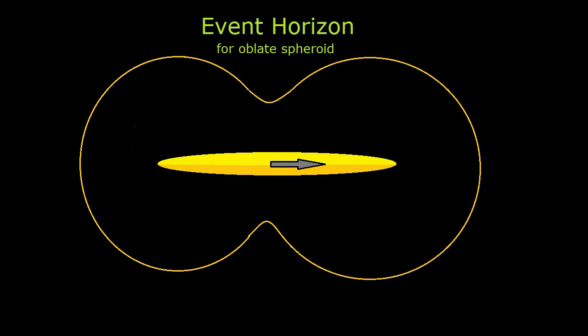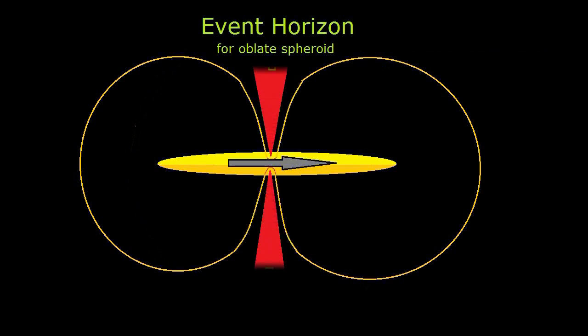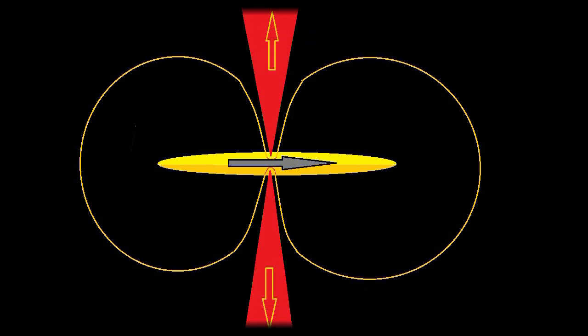Our explanation of jets of matter ejected from a black hole is that as matter accumulates within the event horizon, an oblate spheroidal object forms. And when the eccentricity of the spheroid is sufficient, the event horizon in the center of the torus dips into the object itself, allowing the ejection of matter which is under enormous pressure.